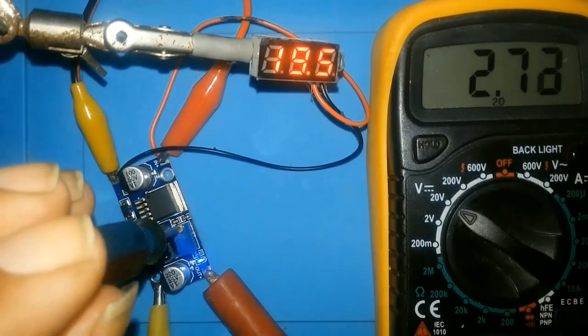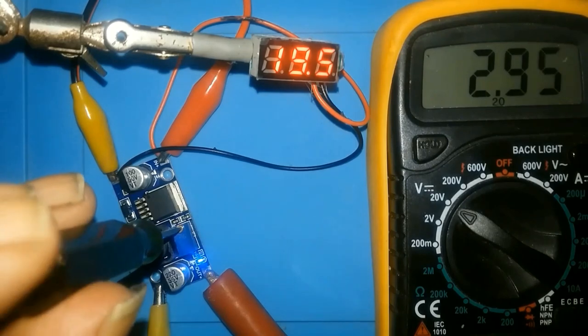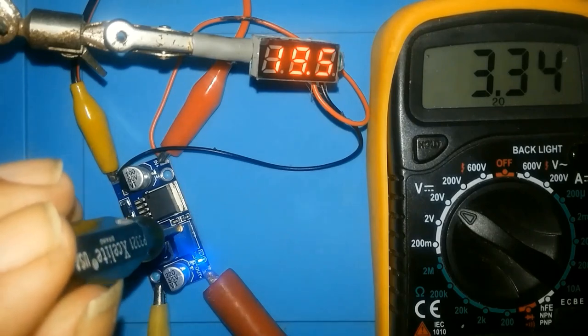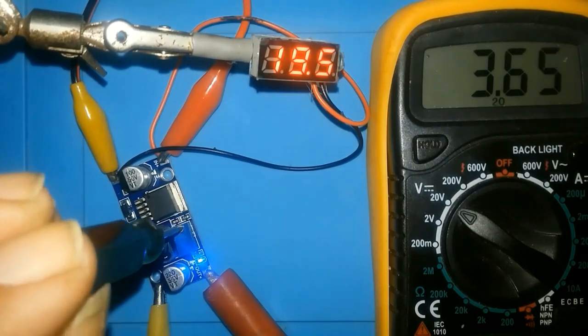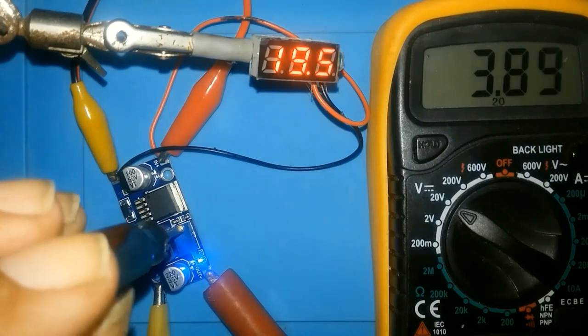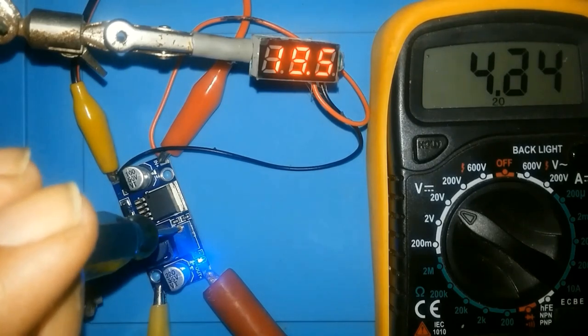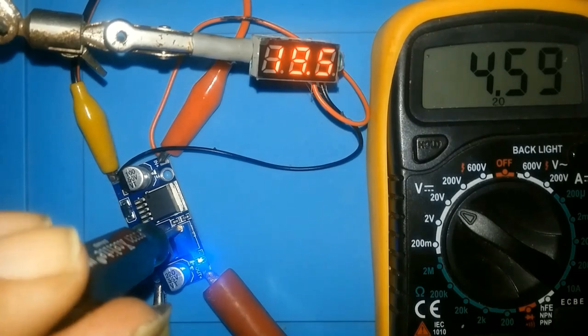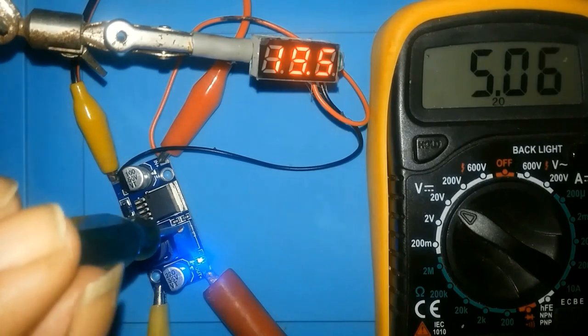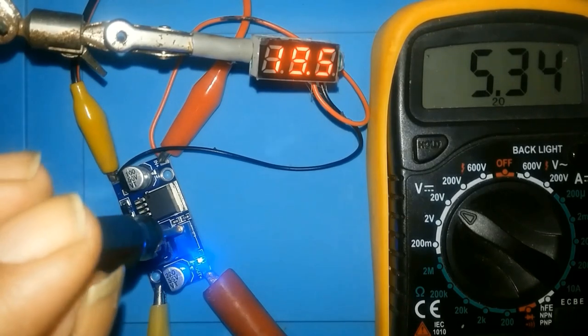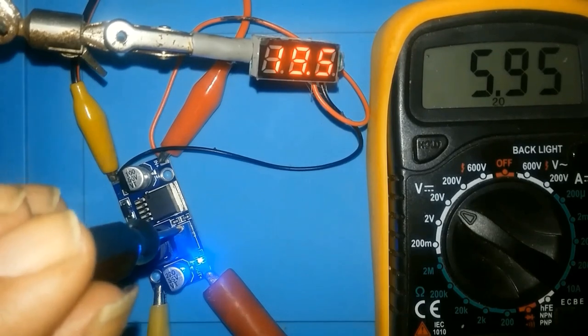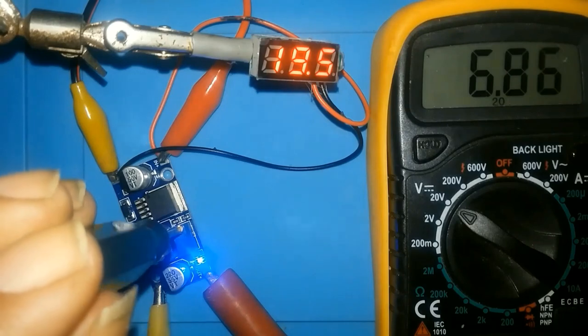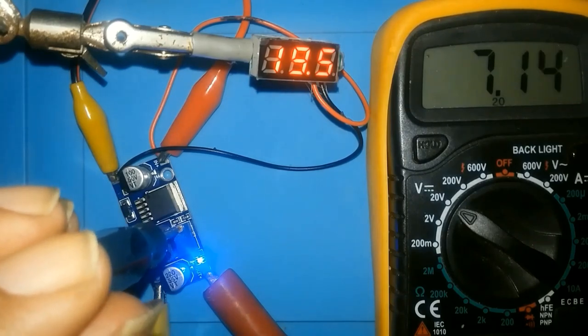So if you have something to test and you need a certain voltage, you can use that, set it to the voltage you want, and test your item. Remember they said it's rated for 3 amp max. I doubt very much you'll get 3 amps out of it. So if you're testing something that's above the 3 amps, it might just shut off.